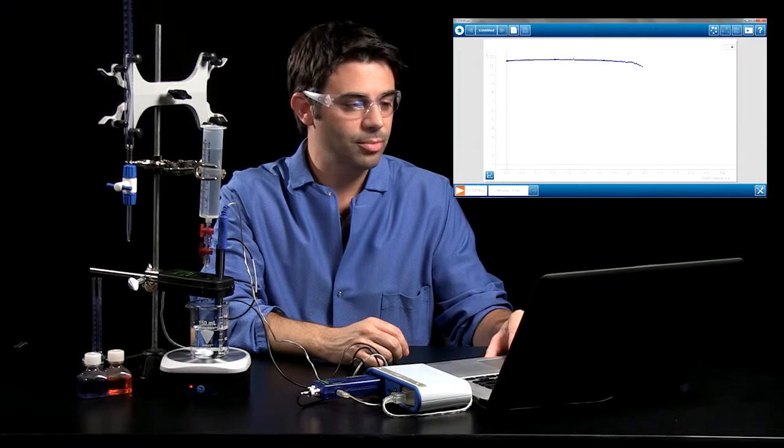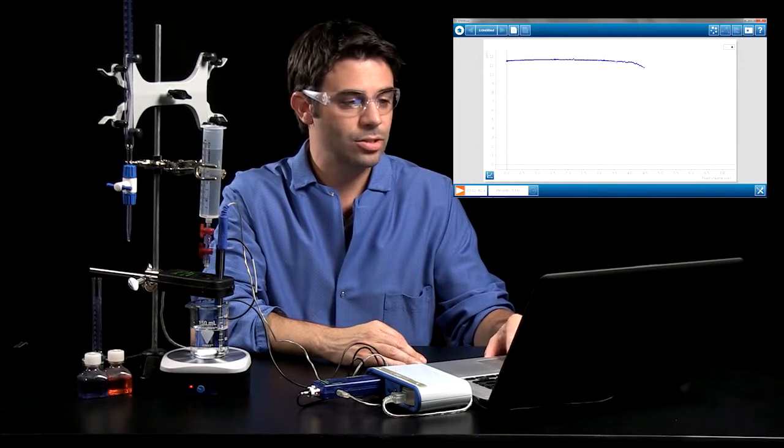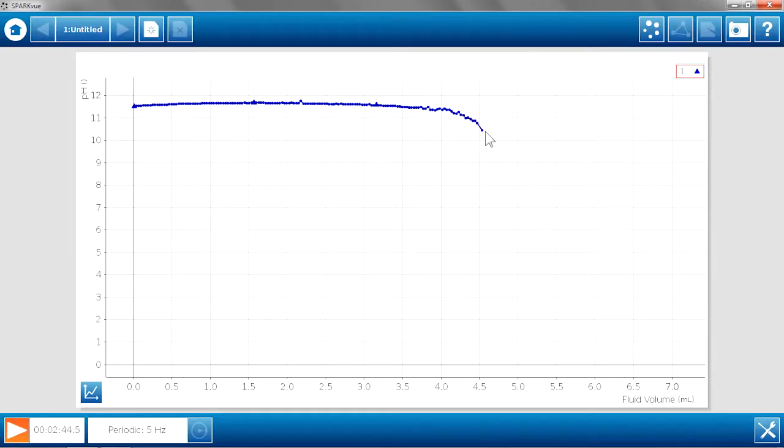So we can see, after a couple of minutes of data collection, the pH is starting to gradually go down. And now it's going down steeper. And now we see those big drops in pH that are indicative of the equivalence point being reached. And we'll let this go for a little bit longer to round out that pH curve.